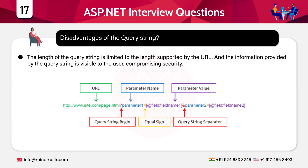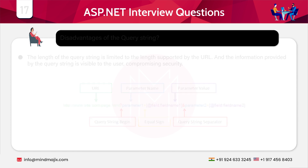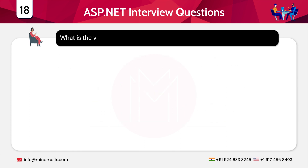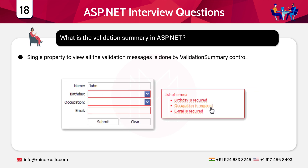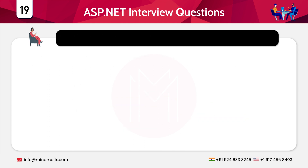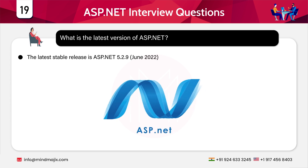With that, we have covered the fresher questions. From question 18 onwards, we will cover questions for experienced candidates — those with at least two to three years of experience with ASP.NET. The next question is: what is the validation summary in ASP.NET? The validation summary control provides a single property to view all validation messages. The next question is: what is the latest version of ASP.NET? The current stable version of ASP.NET is 5.2.9, released in June 2022.